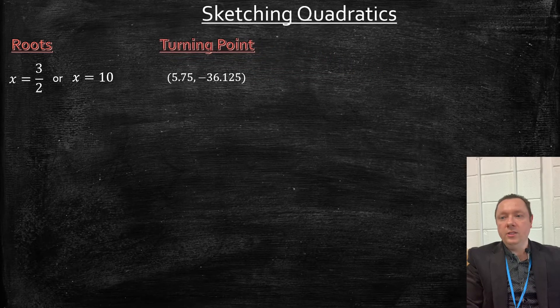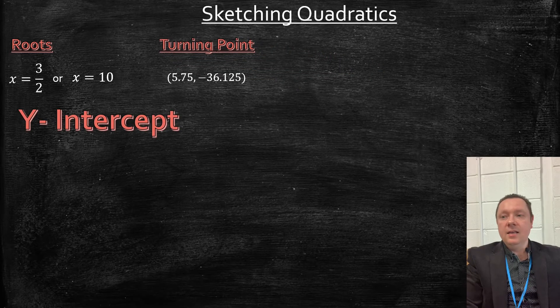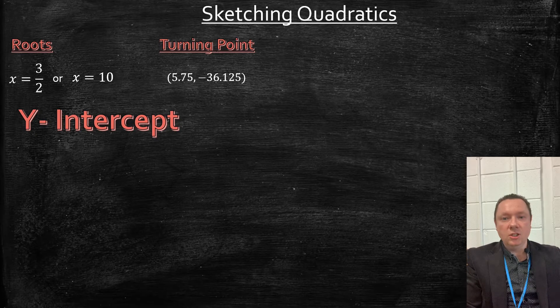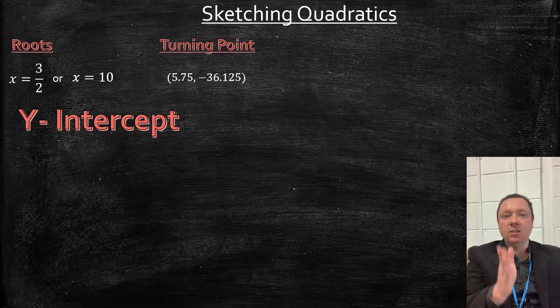We've now got our turning point. So the last thing is the y-intercept. That just happens when x equals 0 because we're not going along the x-axis, we're just going up the y.